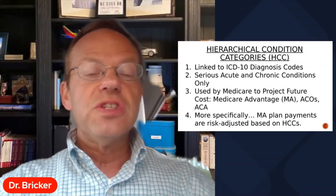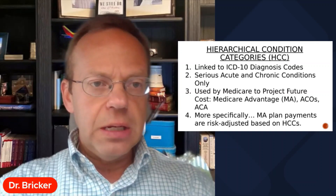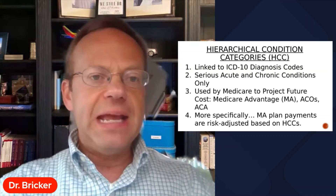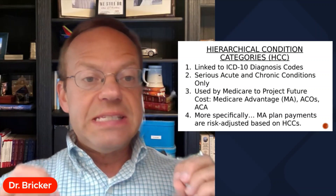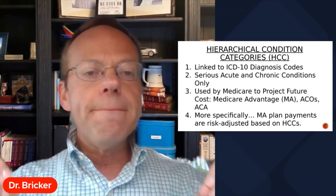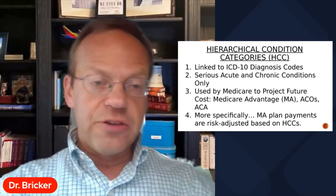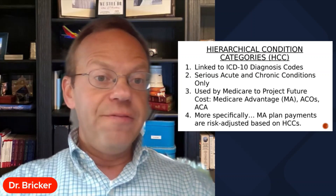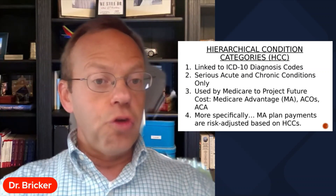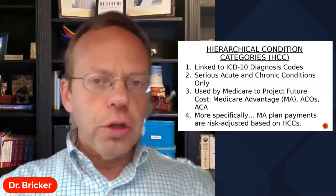As it relates to money in healthcare, risk adjustment is used to determine payments by CMS to health insurance companies that have Medicare Advantage plans. The sicker, the more chronic conditions, the more severe conditions a Medicare Advantage beneficiary has, the more money the federal government gives to the health insurance company to pay doctors and hospitals. How the number and severity of chronic conditions is measured uses something called hierarchical condition categories, or HCC.